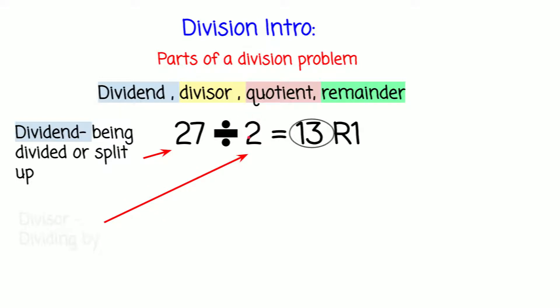2 is actually the divisor. The divisor is what we're dividing by — so like we're dividing 27 by 2. So that is the divisor.